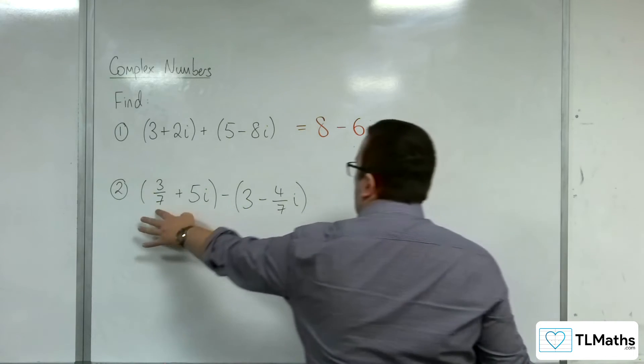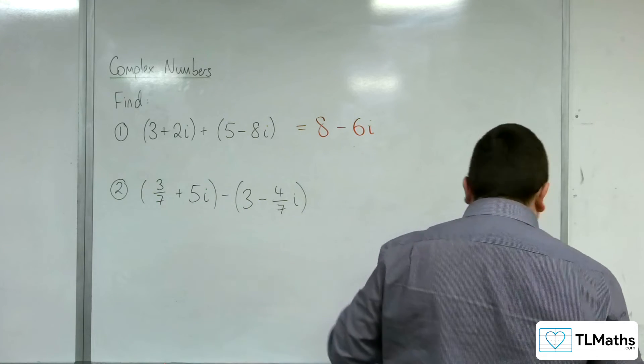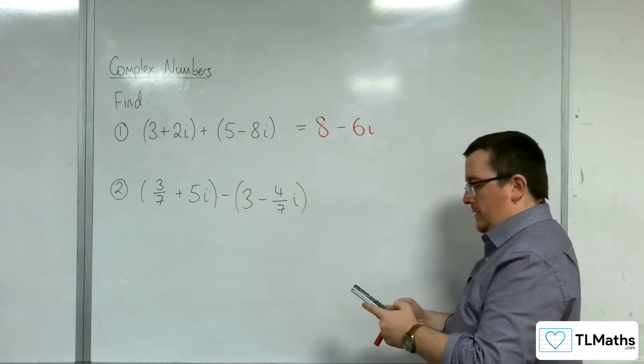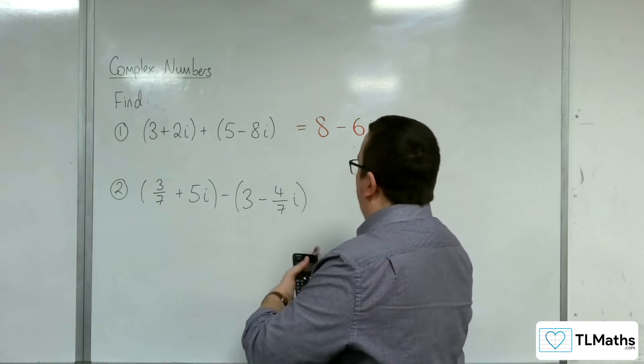Likewise, here we've got 3/7 take away 3. Let's deal with the real parts first. 3/7 take away 3 gives us minus 18/7.